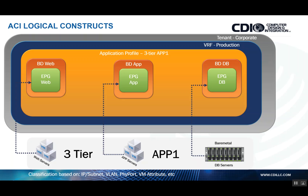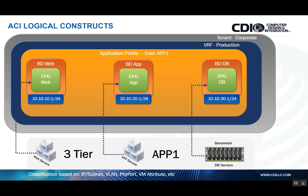We also have something called a bridge domain, which each EPG in this particular case is tied to. The bridge domain represents a layer two forwarding construct. You can have a single bridge domain with multiple EPGs as well, but the reason for this design — tying each endpoint group to its own bridge domain — is for flexibility with layer four through seven service insertion, which I'll touch on shortly. We also define our subnets on the bridge domain, which is common if you want to leverage the ACI fabric as a layer three fabric. This gateway address becomes the default gateway for the web EPG, and you can define multiple subnets and default gateways under each bridge domain.